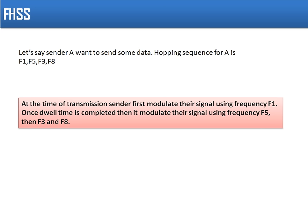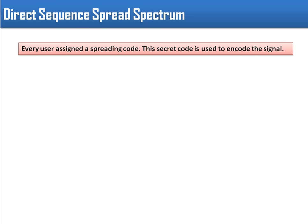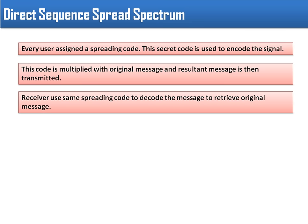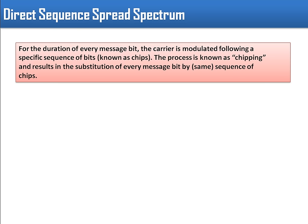The next technique is Direct Sequence Spread Spectrum (DSSS). In this technique, every user gets a code, and that code is used to encode the signal. The code is multiplied with the original message, and the resultant encoded message is then transmitted. At the receiver, the same code is multiplied with the received message to retrieve the original message.